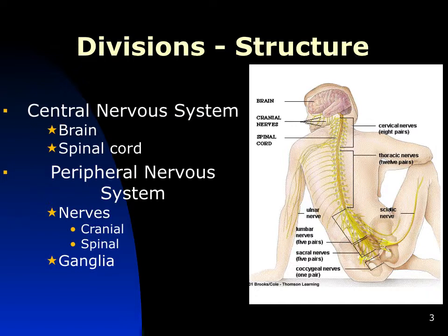The nervous system has two main divisions. The central nervous system (CNS), which contains more neurons than any other part of the body, includes the brain and spinal cord. This is where most sensory input is integrated, homeostatic reflexes are centered, and all higher functions are confined. The peripheral nervous system carries messages from sensory organs to the CNS and to muscles and glands via cranial nerves or spinal nerves. Small collections of nerve cell bodies outside the CNS are called ganglia.